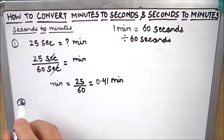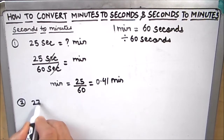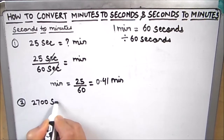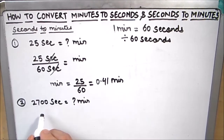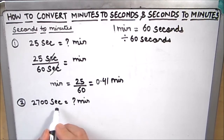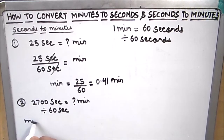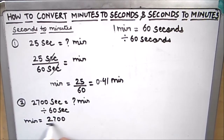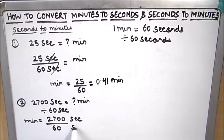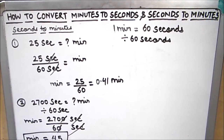Here we will convert 2700 seconds to minutes. As we are converting from seconds to minutes, we need to divide by 60 seconds. So our minutes will become 2700 divided by 60 seconds, and we will get 45 minutes.